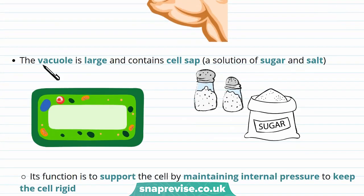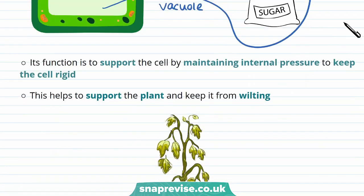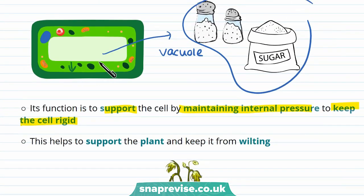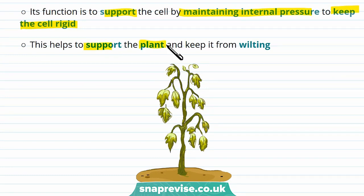Plant cells also have a vacuole. This is large and contains cell sap, which is a solution of sugar and salt. The function of a vacuole is to support the cell by maintaining internal pressure to keep the cell rigid. For example, the vacuole pushes out onto the cell wall, which keeps the cell the right shape and rigid, and also helps to support the plant and keep it from wilting.